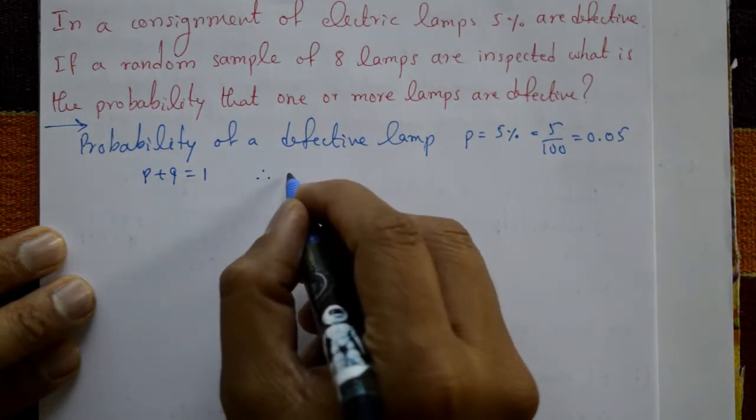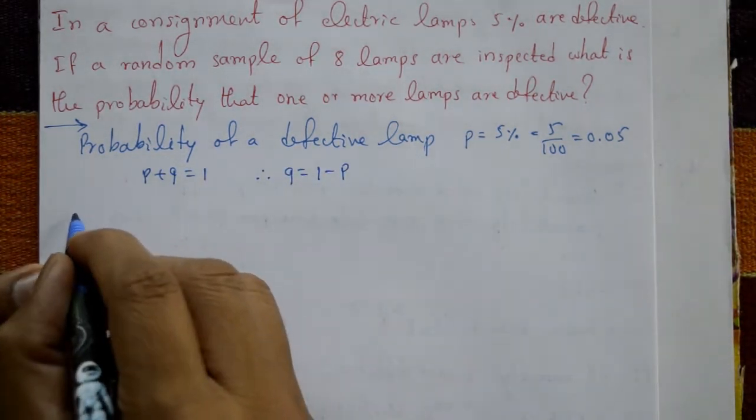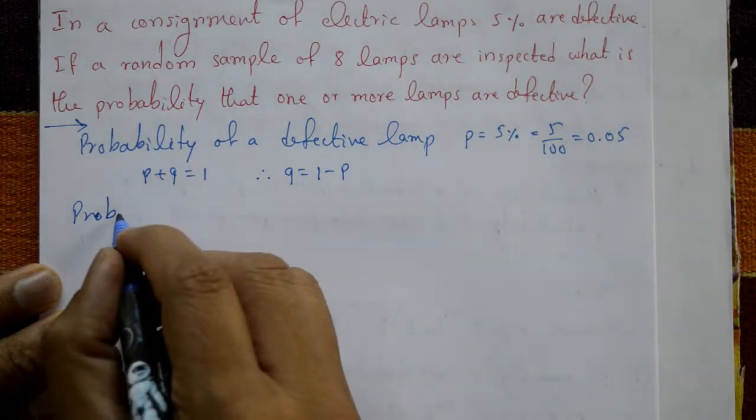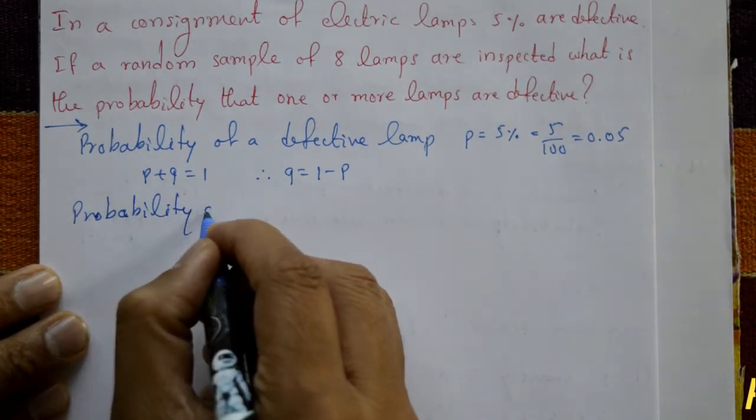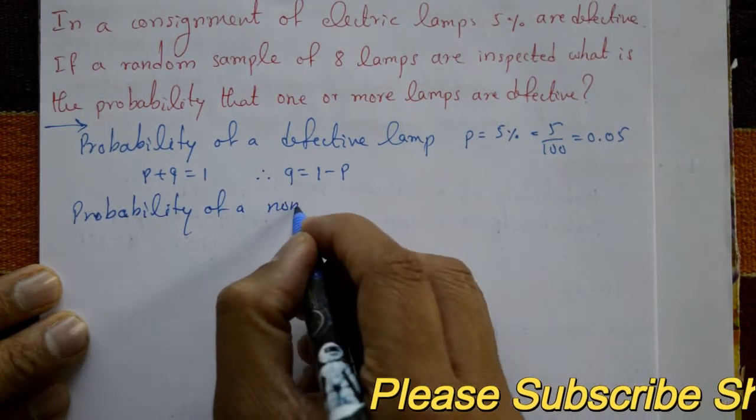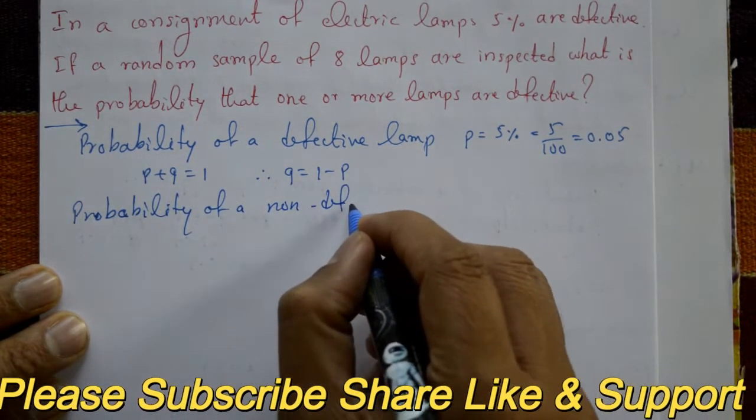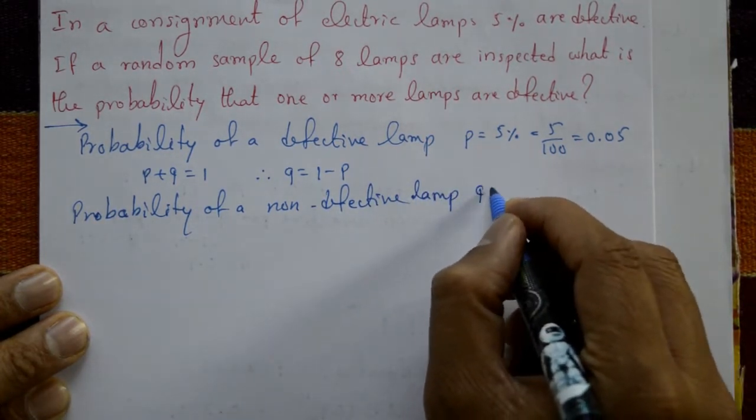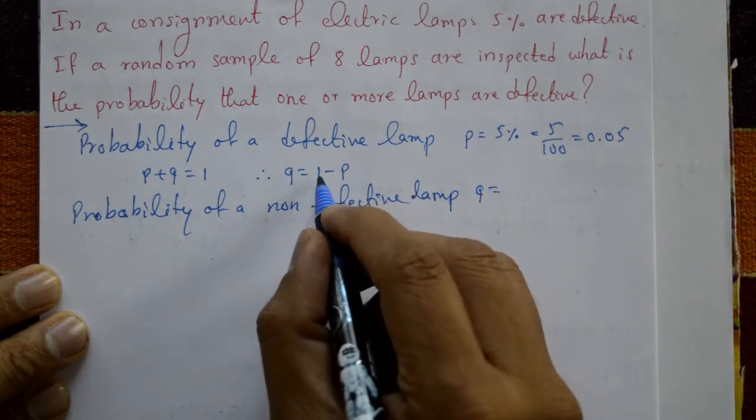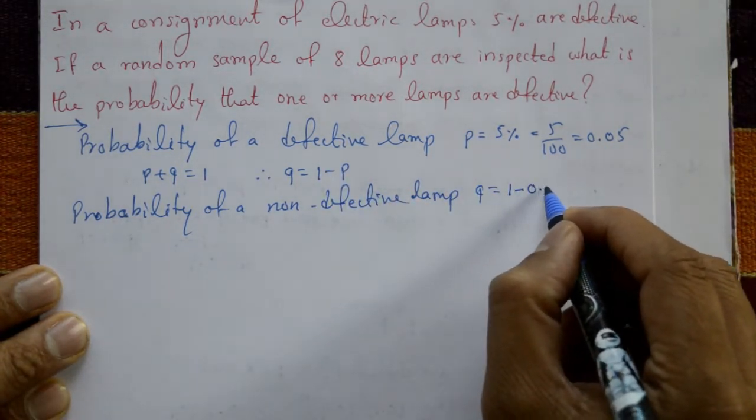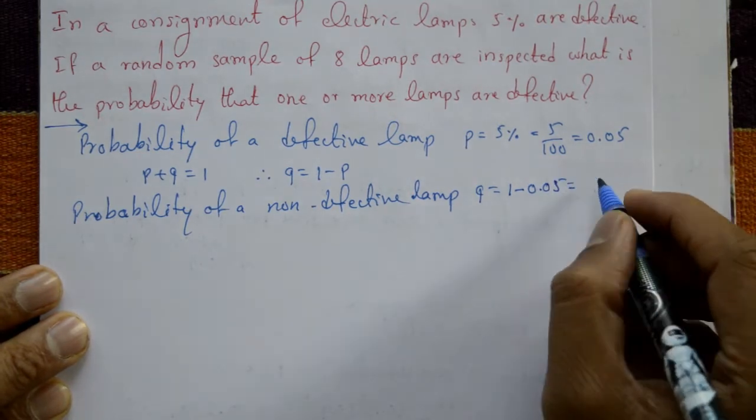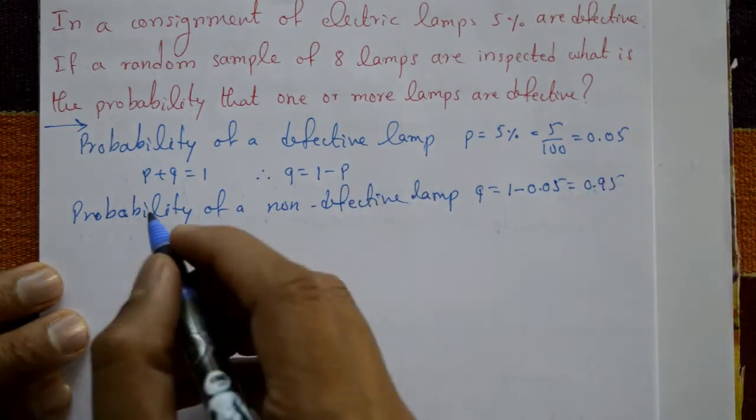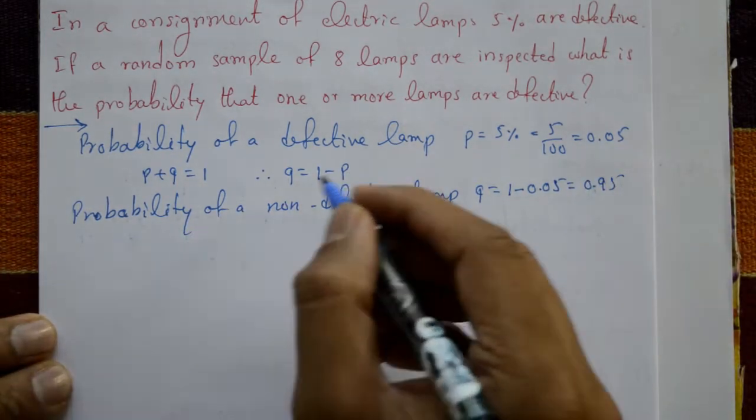Now favorable plus unfavorable is equal to 1, then Q is equal to 1 minus P. Probability of a non-defective lamp, Q is equal to 1 minus P. P is 0.05, so 1 minus 0.05 is 0.95. This is the P value and this is the Q value.